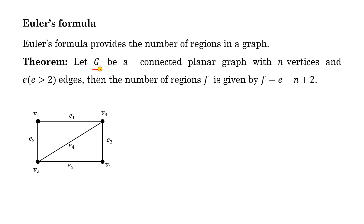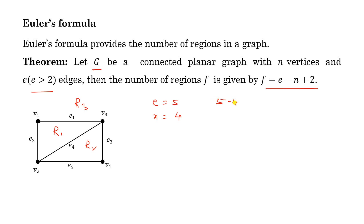Euler's formula provides the number of regions in a graph. Let G be a connected planar graph with n vertices and e > 2 edges; then the number of regions f is given by f = e - n + 2. We require e > 2 because for e ≤ 2 we cannot form a region. Verify this for the example graph: e = 5, n = 4, so e - n + 2 = 5 - 4 + 2 = 3, and indeed f = 3 regions exist.